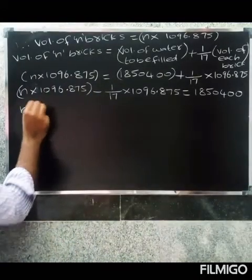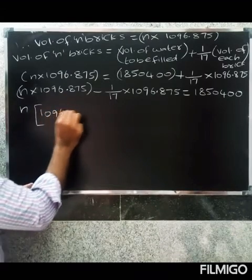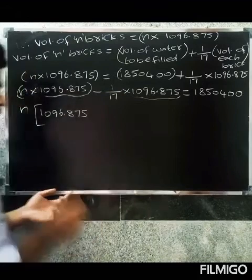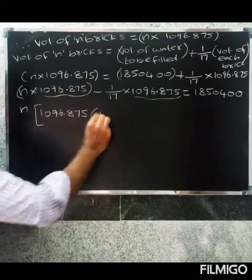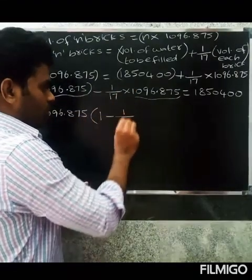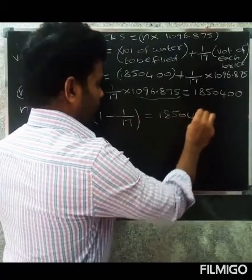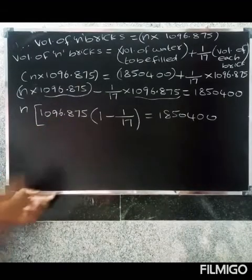Taking n common, we get n into 1,096.875. One minus one-seventeenth equals 1,850,400. So n into 1,096.875.